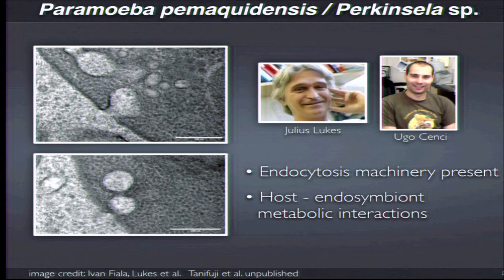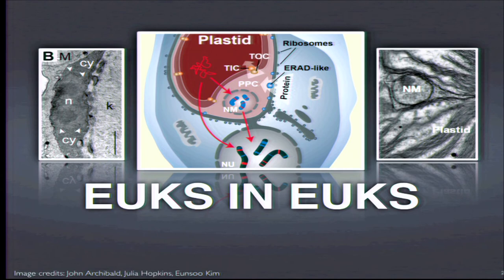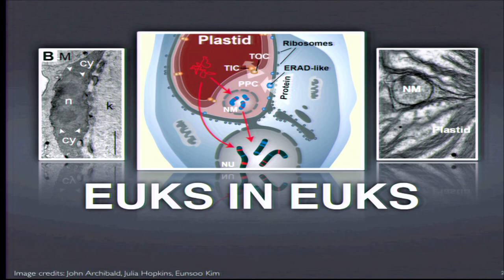Ugo has carried out metabolic reconstructions of the amoeba — which has about 20,000 genes, so it's a normal amoeba in many ways — and compared those metabolic profiles to those predicted from the endosymbiont. One intriguing lead is that there may be amino acid biosynthetic processes provided by the amoeba that are not being carried out by the endosymbiont, which could explain why the endosymbiont is taking in material from the amoeba. But the short answer is that we have no concrete leads at this point.